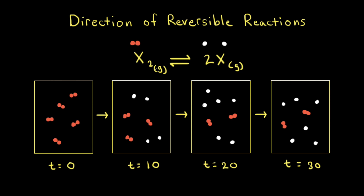As an example of a reversible reaction, let's look at the hypothetical reaction where diatomic gas X2 turns into its individual atoms X, producing two of them. So X2 goes to 2X. The forward reaction is X2 turning into 2X, and the reverse reaction is 2X combining to form X2.